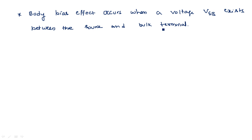Body bias effect occurs when a voltage VSB exists between the source and substrate, also called the bulk terminal. If we do not apply this source-to-substrate voltage VSB, the body bias effect is not present, meaning we are not changing the threshold voltage.